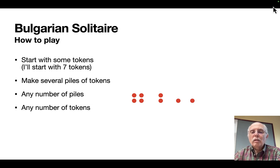You can have any number of piles that you want and any number of tokens in each pile. So I'm going to start with these four piles: a pile of four, then two, then one, and one.